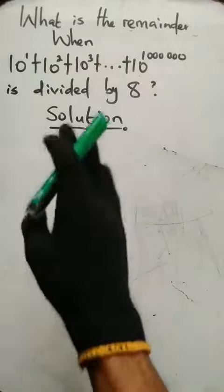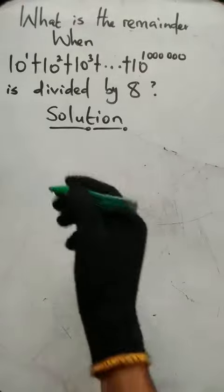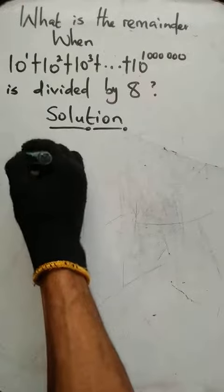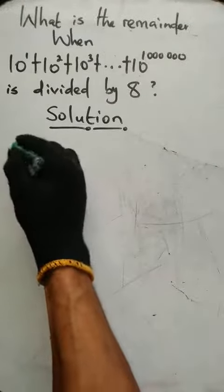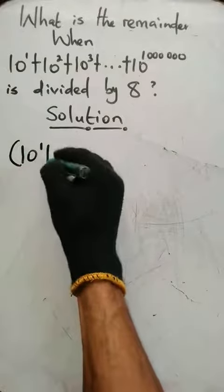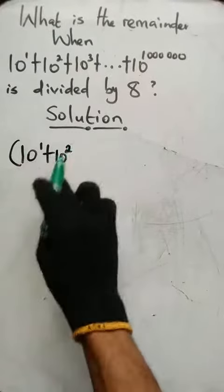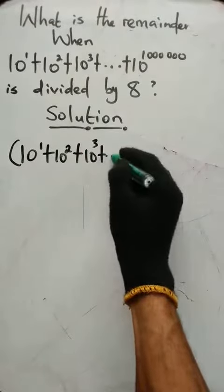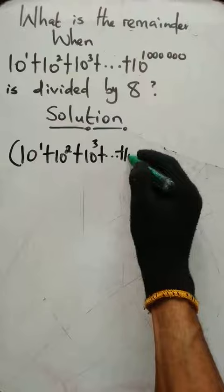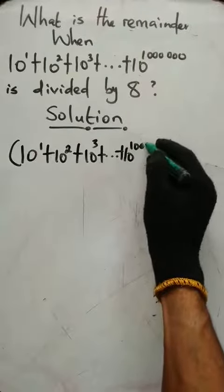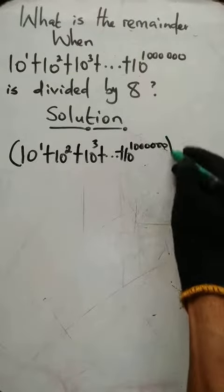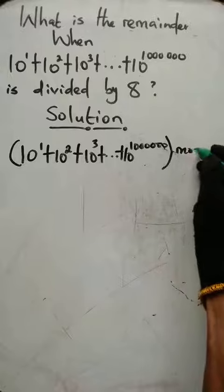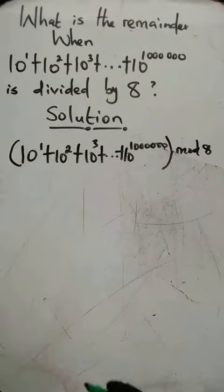So now this expression can be rewritten as 10 in brackets raised to power 1 plus 10 in bracket raised to power 2 plus 10 raised to power 3 plus all the way to 10 raised to the power 1 million, close bracket, then mod 8 since we are dividing this by 8.